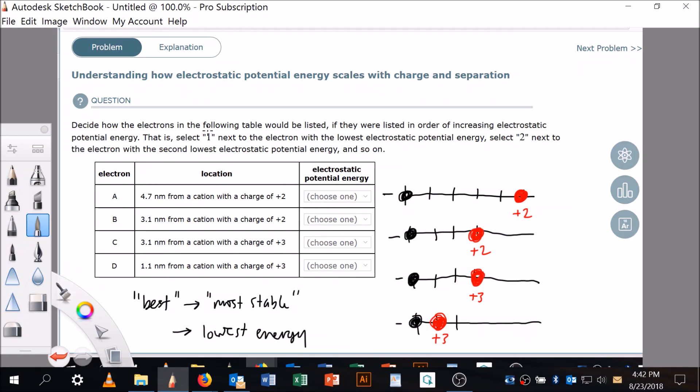Yeah, that's right. Select one next to the electron with the lowest electrostatic potential energy. That's the best, right? The lowest potential energy. And this is the one right here. I can see it. I can see that this is the lowest because look: they're closest. I got a plus three and a minus one. This is attractive, and that means they really liked each other. Plus and a minus, they really like each other. They're close, and the charge is big. So this is one.